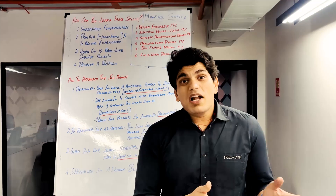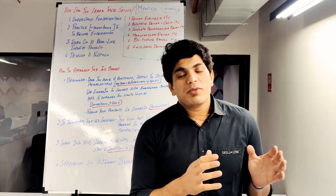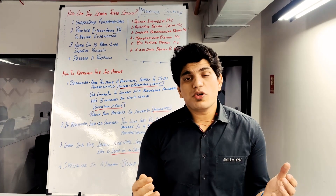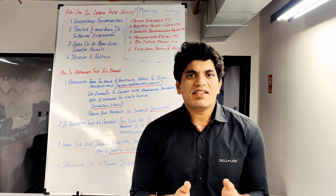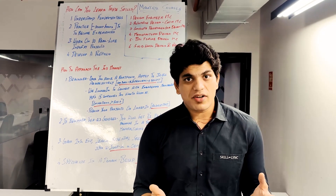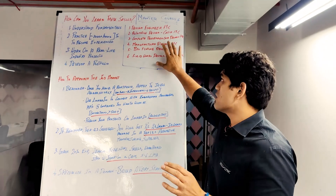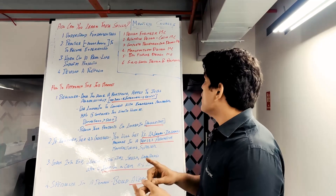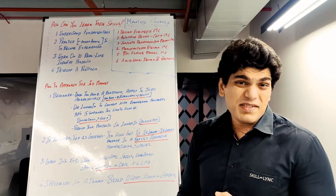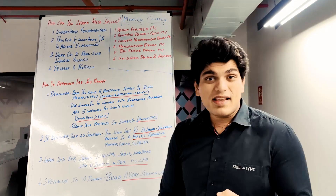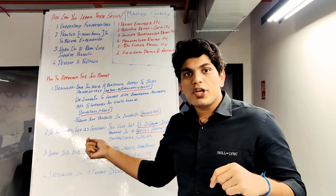Hey guys, this is the studio from Skill Link — hope you're doing well. Welcome back to our career series. In part one of 'Five Ways to Become a Design Engineer,' I spoke about the different aspects of design engineering. In this part, I'll walk you through the steps you need to take to have a successful design engineering career. To recap, our master courses in design are: Design Engineers Master Program, Automotive Design, Complete Passenger Car Design, Manufacturing Design, BAW Fixture Design and Plastics, and SOLIDWORKS Design and Analysis.